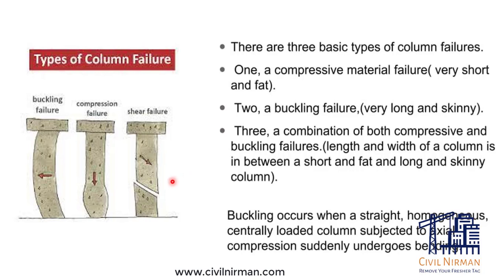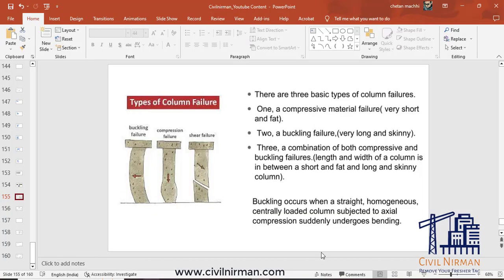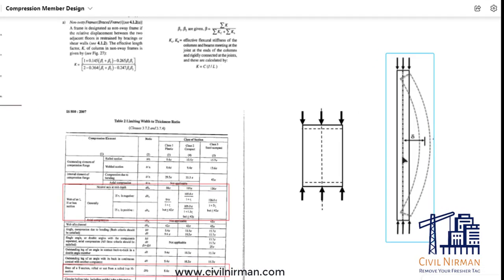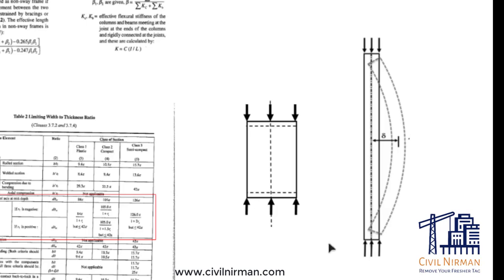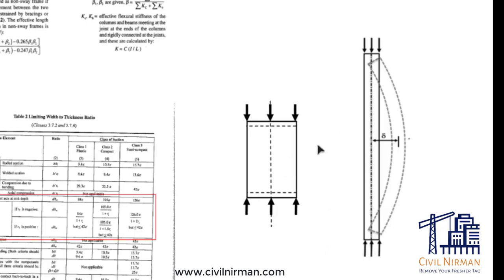Buckling occurs when a straight, homogeneous, centrally loaded column subjected to axial compression suddenly undergoes bending. Looking at the two sketches of a short column and long column: short columns have a large lateral dimension compared to their length, so the tendency to buckle under compression load is very less, and they usually fail by compression yield or crushing.